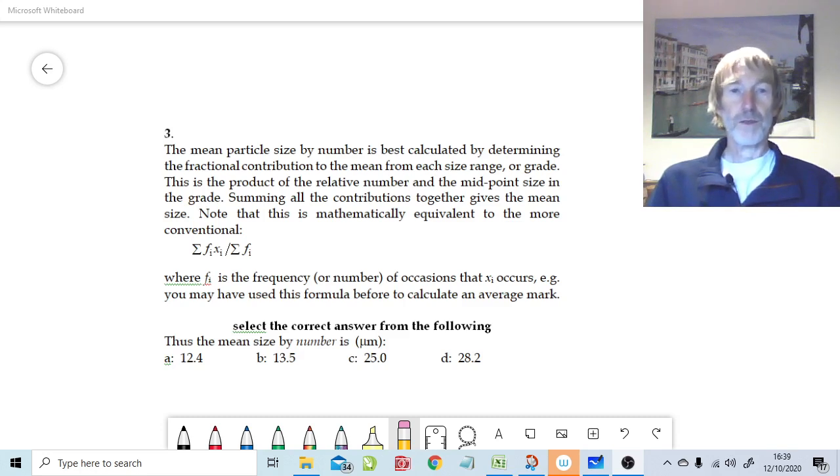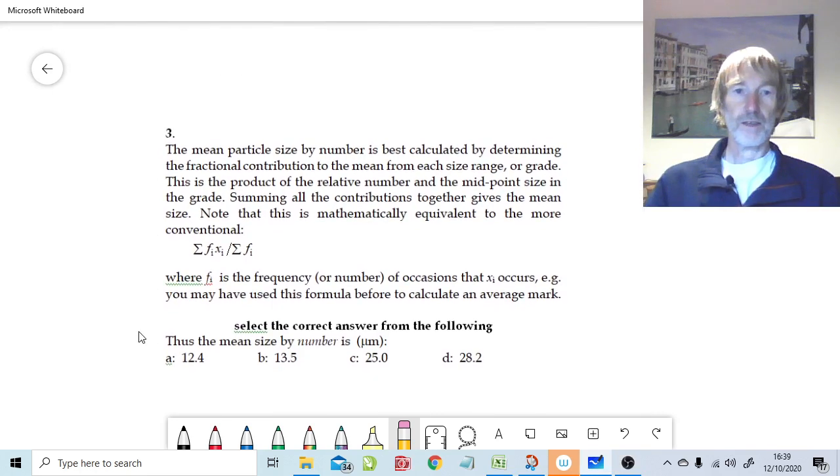What's in front of us is what's actually in the book. Essentially, it's this question down here. Calculate the mean by number for question 3. And we're given four options: 12.4, 13.5, 25, and 28.2 microns.